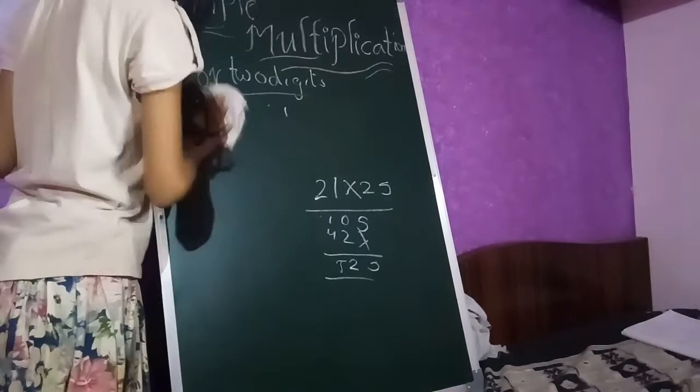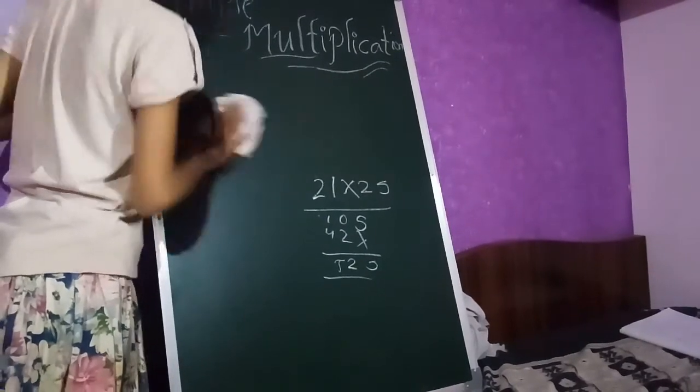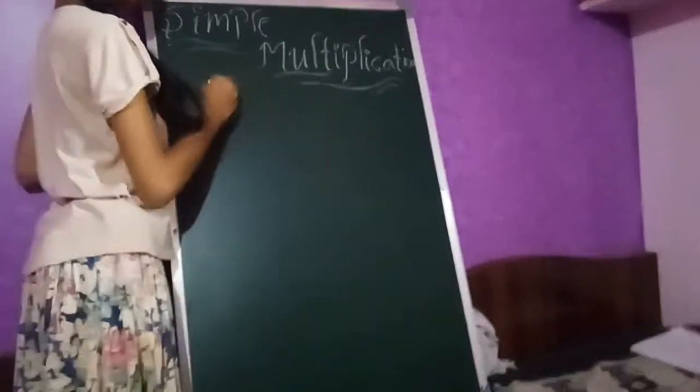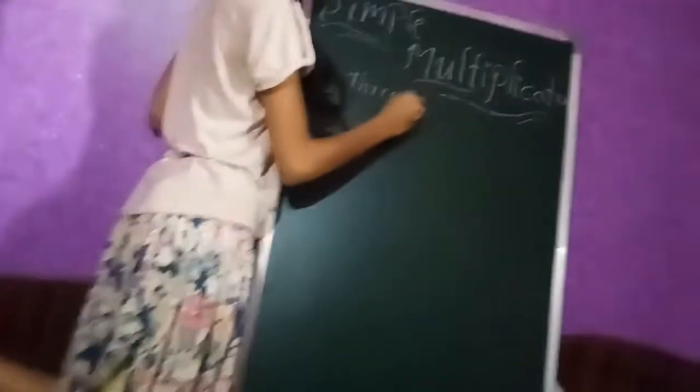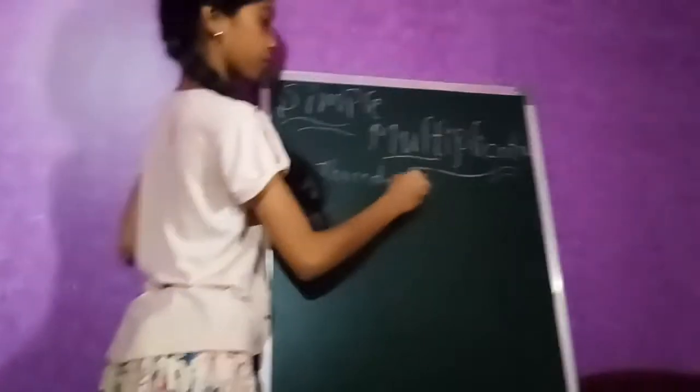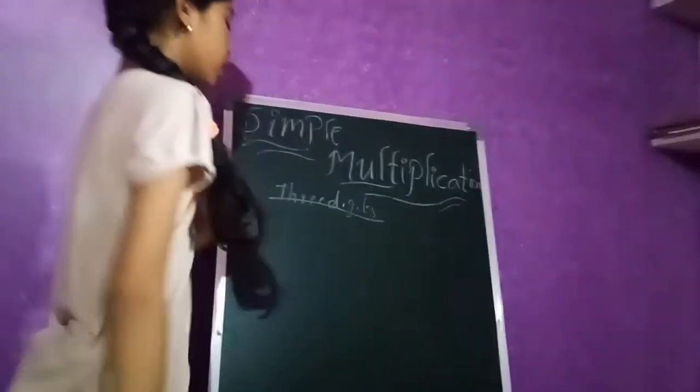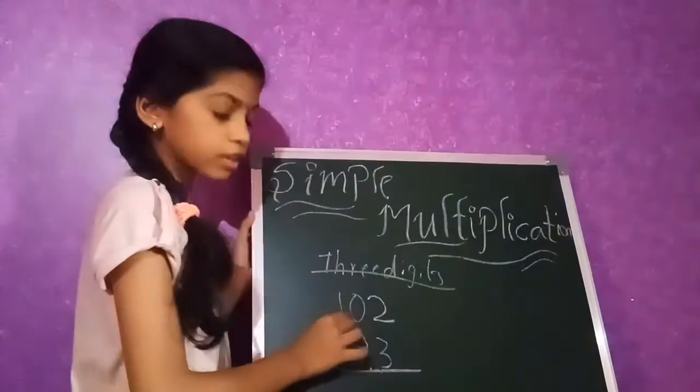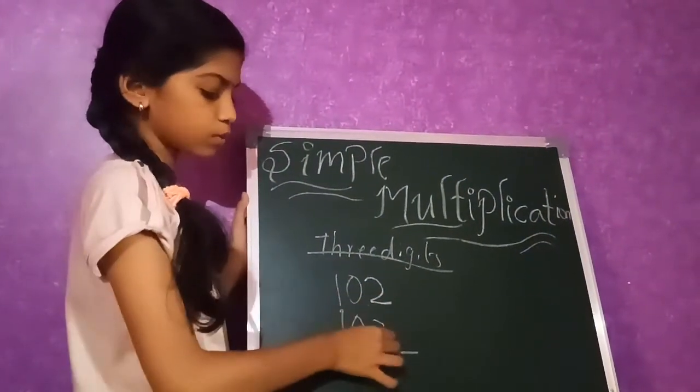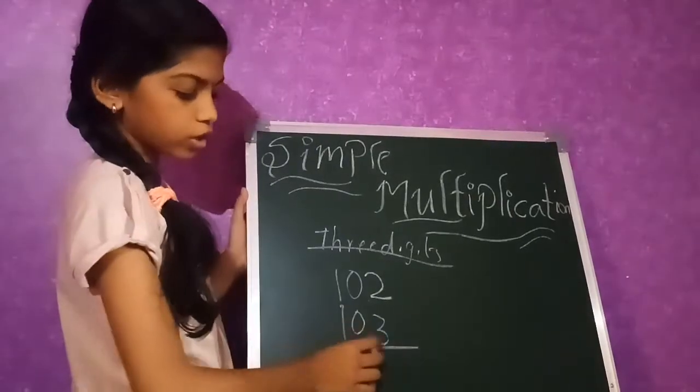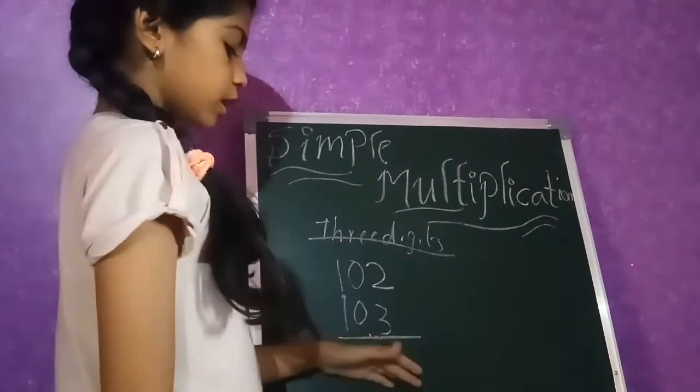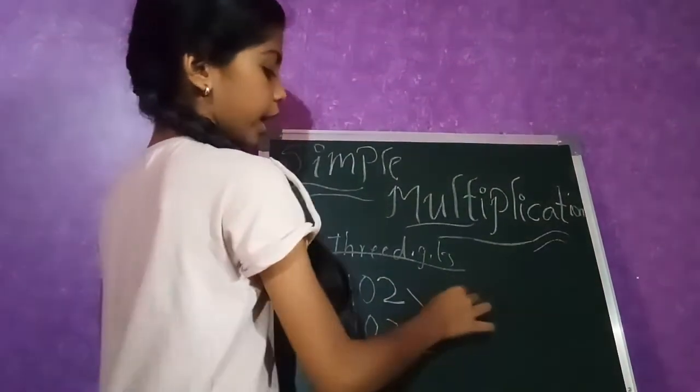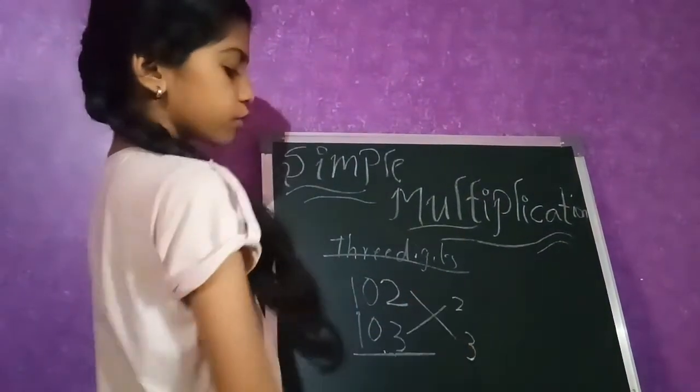Now we'll go to 3 digits. For 3 digits, next 3 digits method. See friends, 102 into 103 which you take. It's very difficult, no? That's why I'm taking another method. Keep like this. Again, 2, 3.